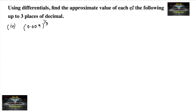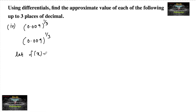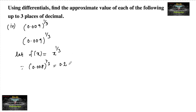Using differentials, find the approximate value of (0.009)^(1/3). This is in the form of x^(1/3), so let f(x) = x^(1/3), the cube root of x. The nearest convenient value to 0.009 is 0.008, since (0.008)^(1/3) = (0.2)^3^(1/3) = 0.2.